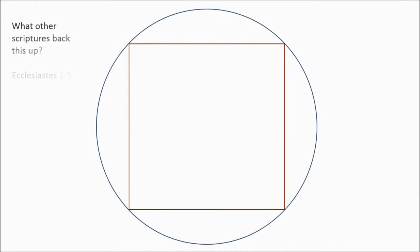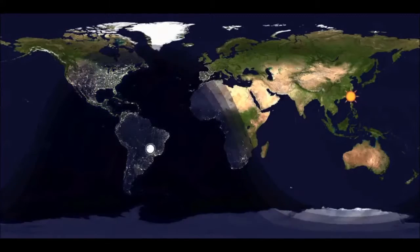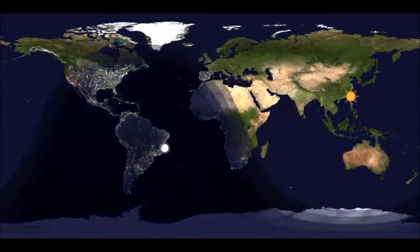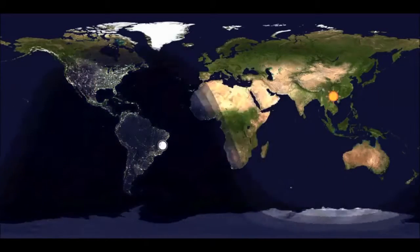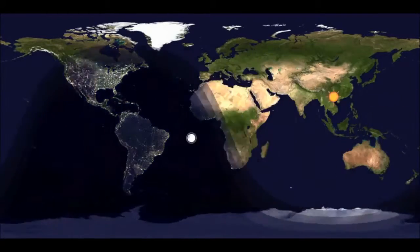Take Ecclesiastes 1:5 and Psalm 19:4-6. They give us a picture not of a sun circling round and round. It says it rises in one part of heaven and sets in another, and it hastens back to where it rose. It's describing the sun going across the earth and giving light and dark where it's not, and it's a continuous circuit.